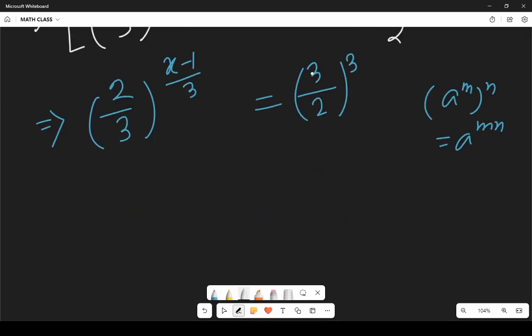In the next step let's reciprocate this so it will be 2 by 3 whole to the power minus 3 and in the left hand side we have 2 by 3 whole to the power x minus 1 by 3.